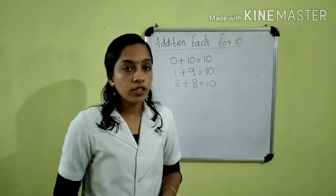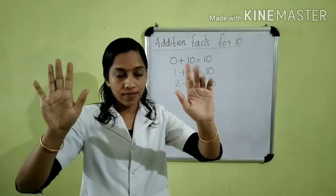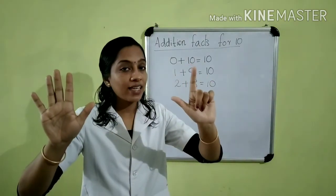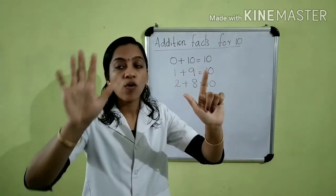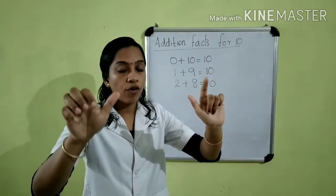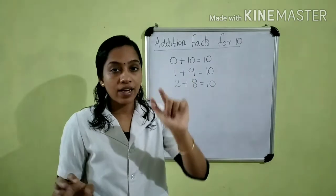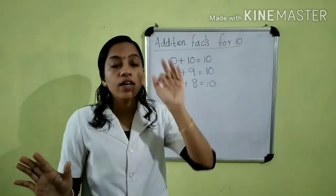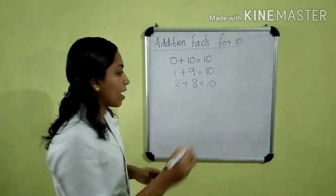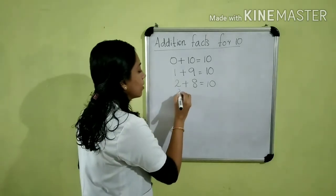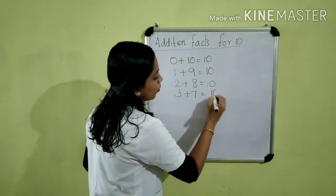Then I am going to fold three fingers, like this. Then tell me children, how many fingers are extended now? 7. Then, 7 fingers are extended and 3 fingers are folded. So we can write, 3 plus 7 is equal to 10.